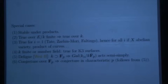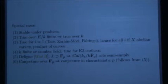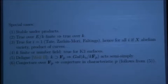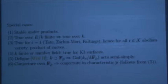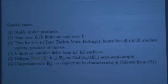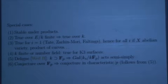First, it's stable on products. Then you can enlarge the ground field as much as you want, as long as you do finite extensions. In cohomological degree 1, it's true because of the theorems on abelian varieties. It's also true for K3 surfaces over finite and number fields. And there's a theorem of Deligne that it's true geometrically in characteristic p.